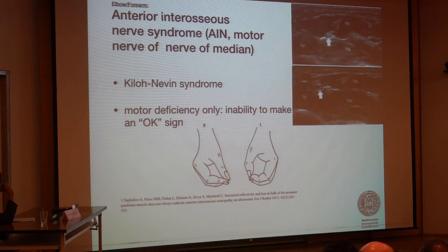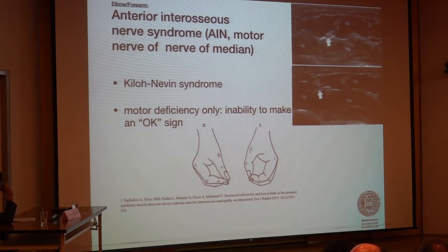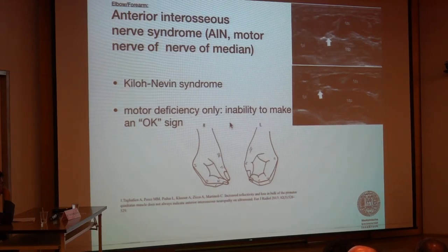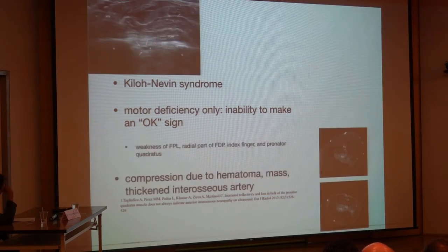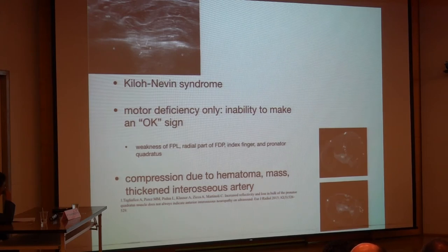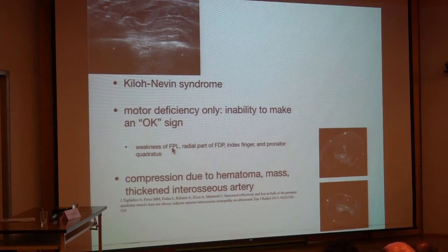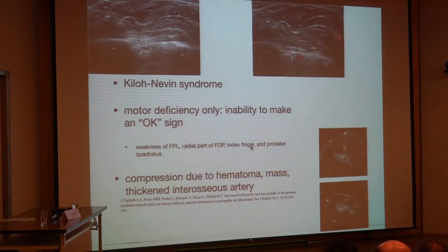The anterior interosseous nerve syndrome affects the motor branch of the median nerve and results in a motor deficiency where patients cannot make the OK sign. We can see this nerve very nicely between the deep and superficial flexors. This can result in muscle atrophy — typically of the flexor pollicis longus, the radial part of the profundus flexors of the index finger, and the pronator quadratus muscle. We can also see the close vicinity of this nerve branch to the artery.